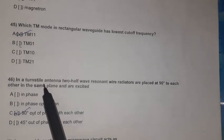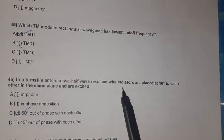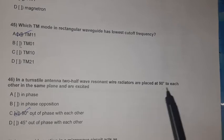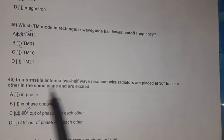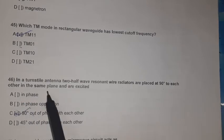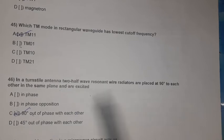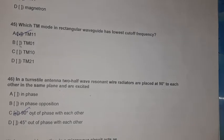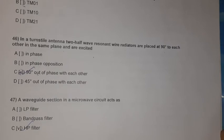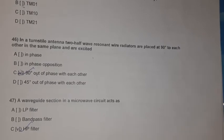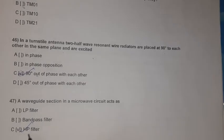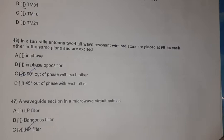Question 46: In a turnstile antenna, two half-wave resonant wire radiators are placed at 90° to each other in the same plane and excited 90° out of phase with each other. Question 47: A waveguide section in a microwave circuit acts as a high-pass filter.